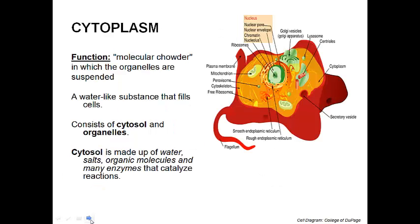This is where we need to start getting some information into your notebooks. I'm going to go through the different parts of a eukaryotic cell — they are more complicated than prokaryotic cells, so we have quite a few parts to get through. The first is the cytoplasm. You can think of it as a soup or a chowder — liquid with solid things floating around in it. The organelles are the solid chunks, and the cytosol is the liquid part.